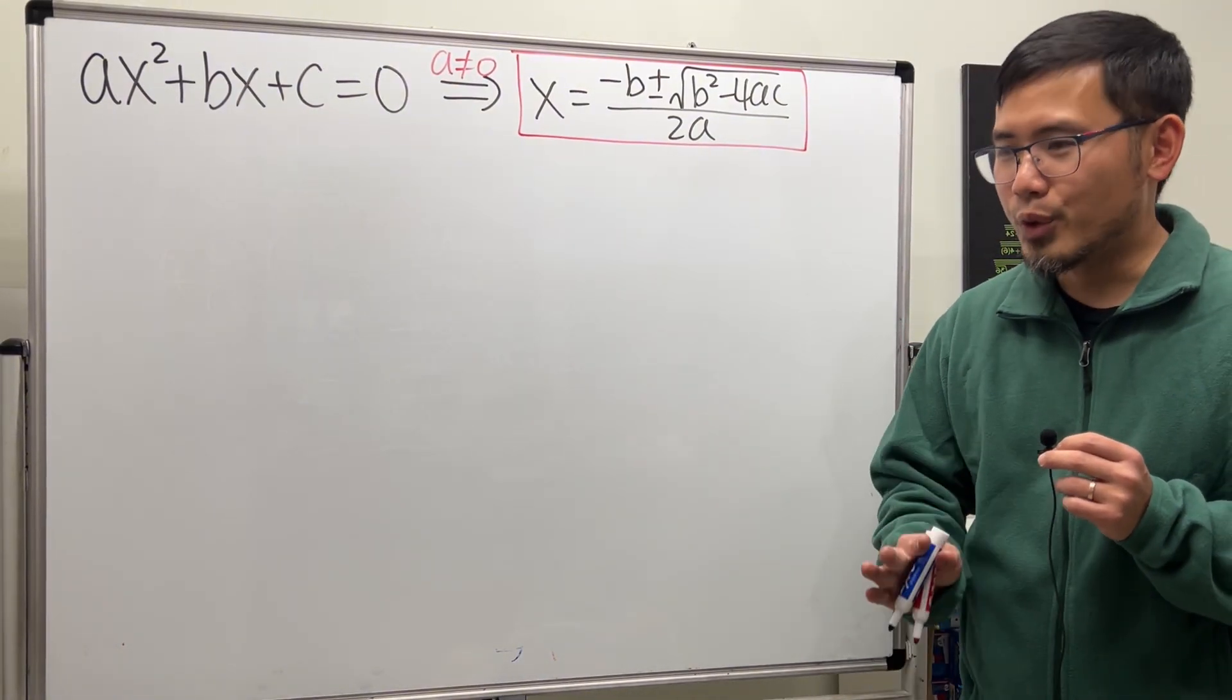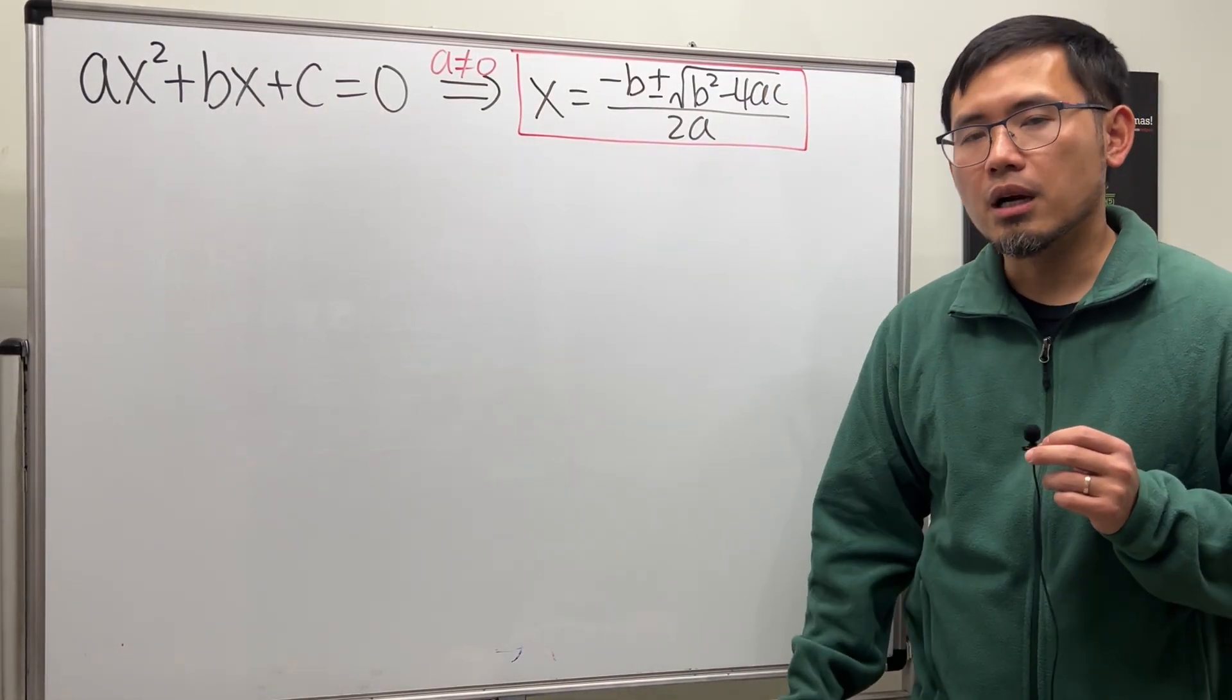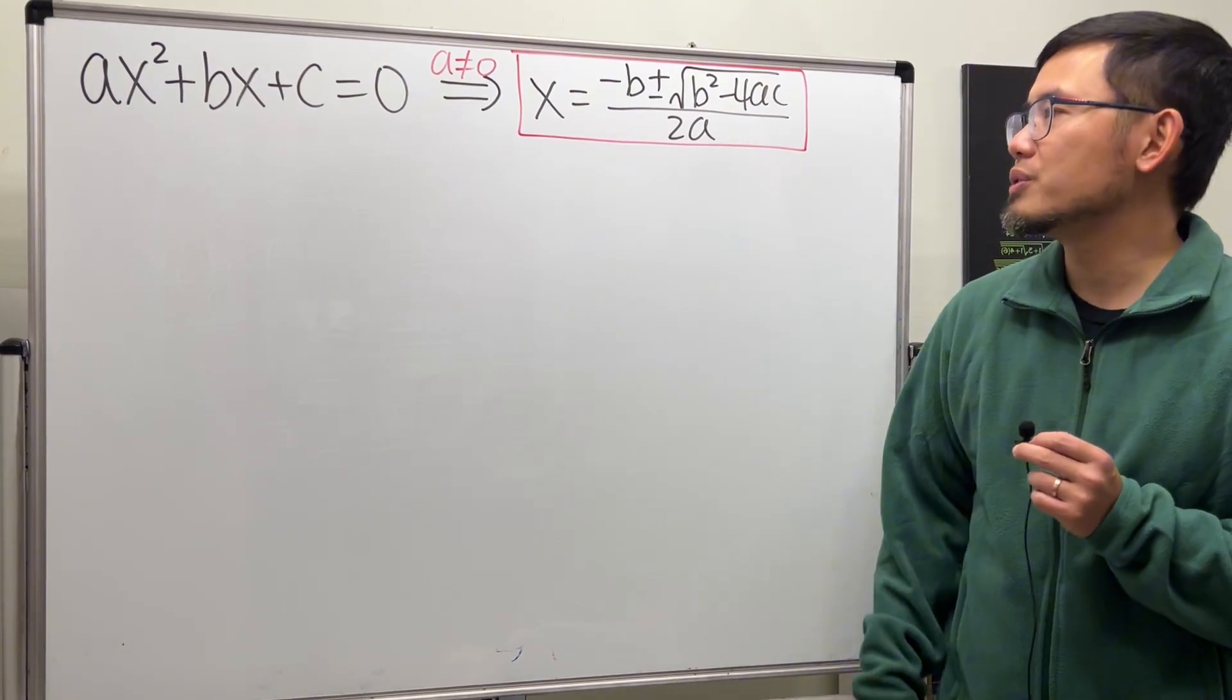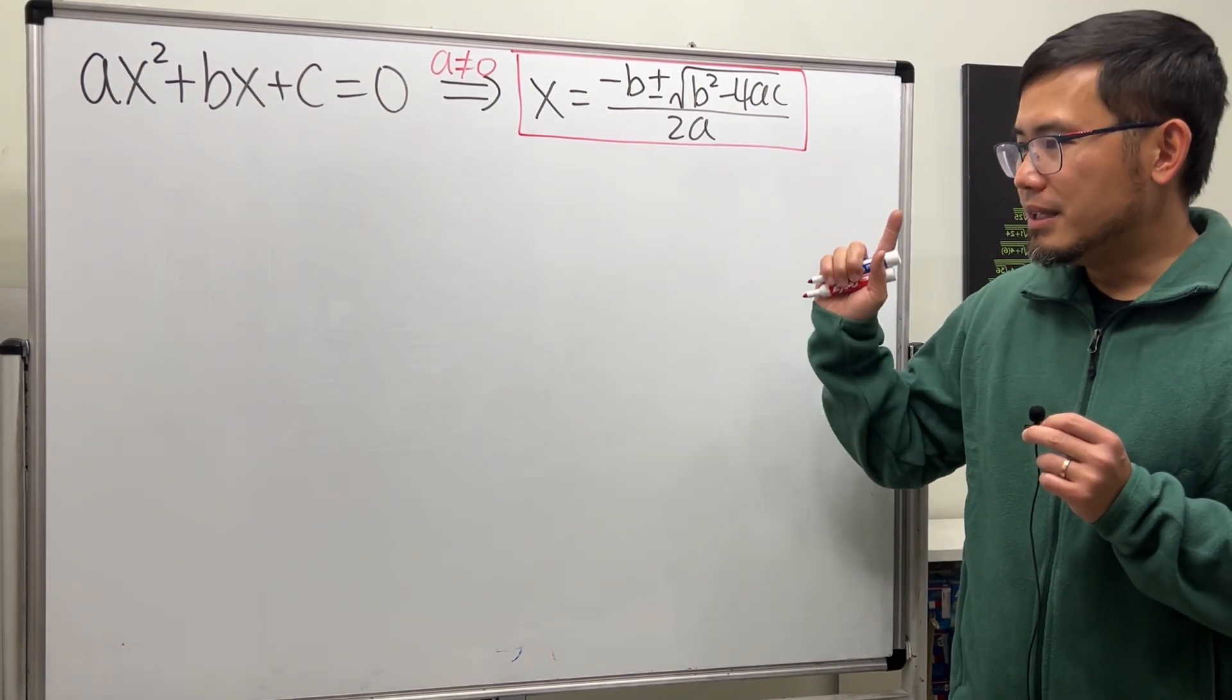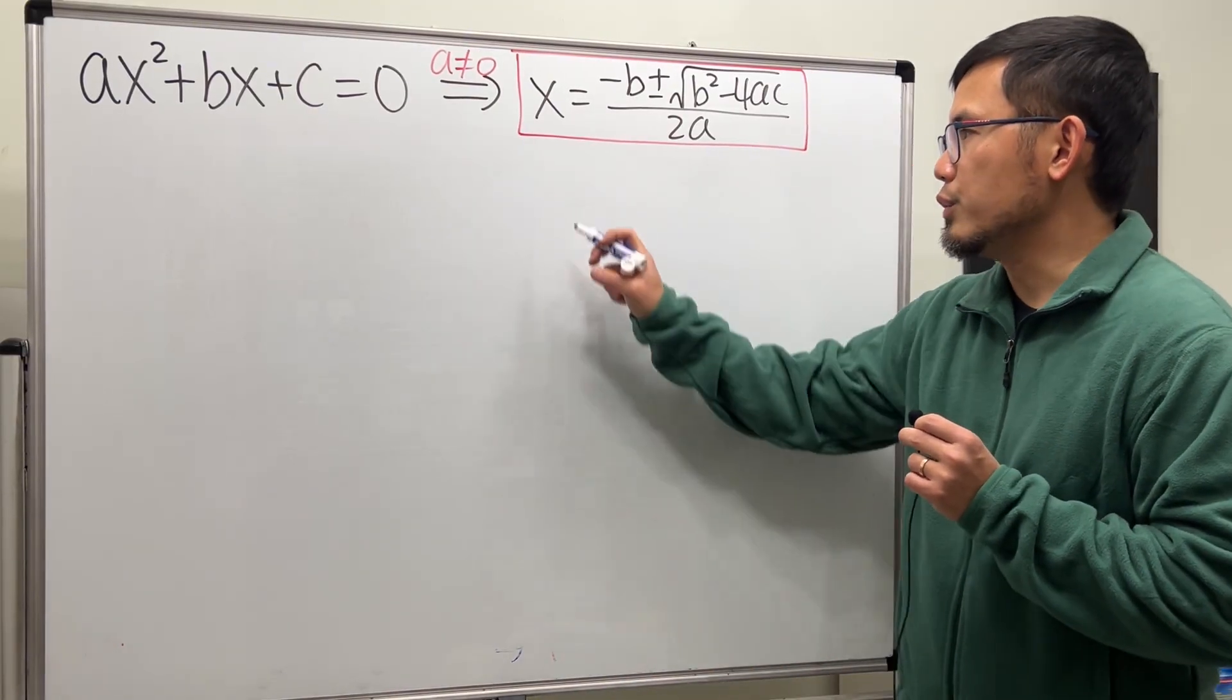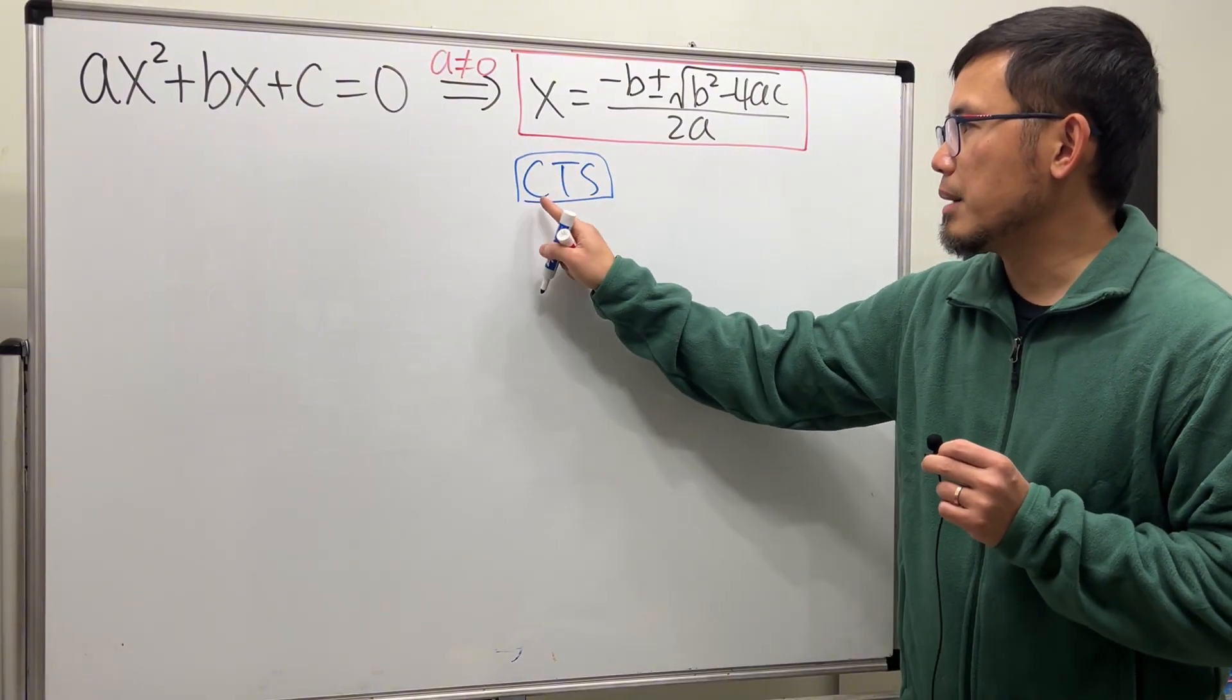Don't worry, today I will show you how we can derive this formula by using the completing the square method. And this right here is the usual approach. Let me review the two major steps of completing the square for you guys first.